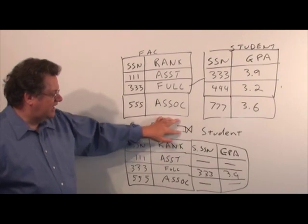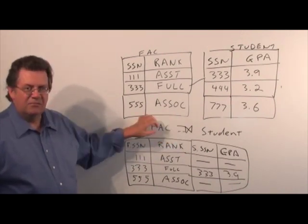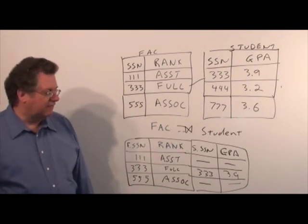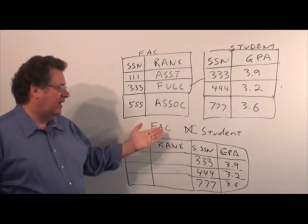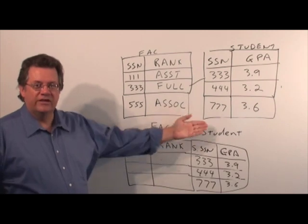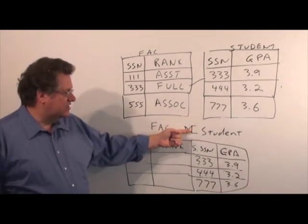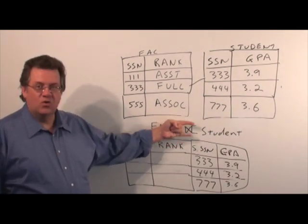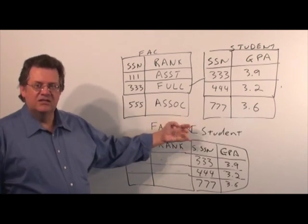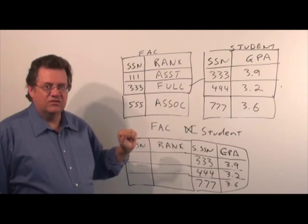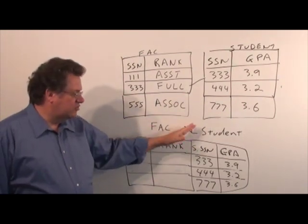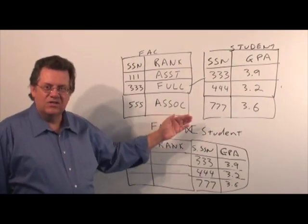That was indicated by these double bars facing left, which is the left outer join. Now let's take a look at the right outer join. Here we have faculty right outer join student. As you can see the double bars are facing towards the student, so that means we're going to retain all the rows from the student. I've taken liberty to write that down here and we see all the rows from the student: 333, 444, and 777.